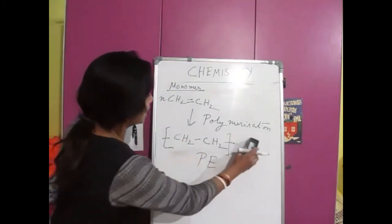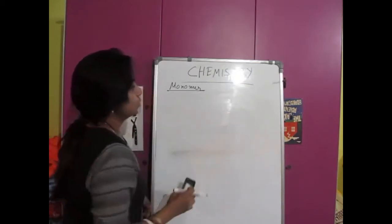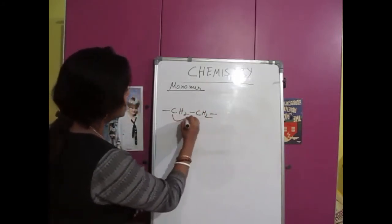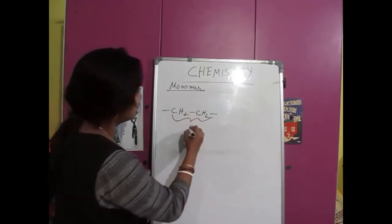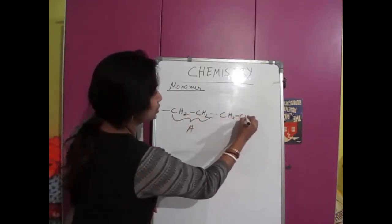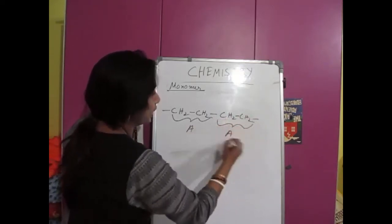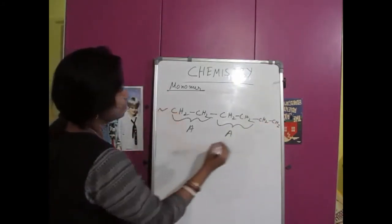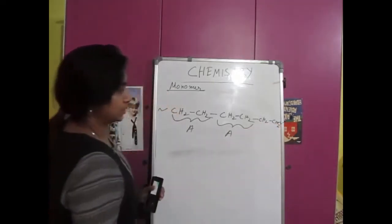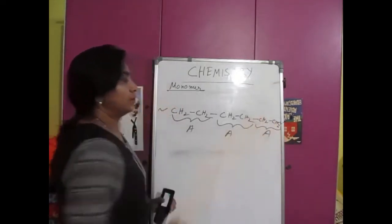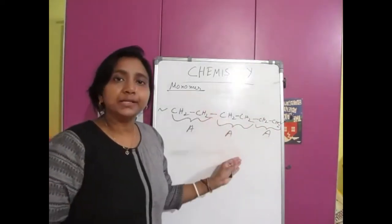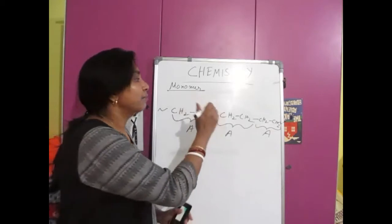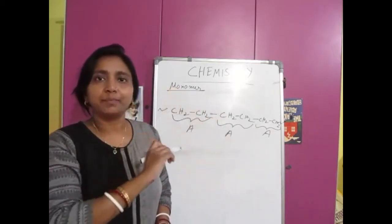Basically, if I write in this way: CH2, CH2 — so it is one unit, single unit, like say A. Again, we are writing CH2, CH2, so it is also another unit A. CH2, CH2 — and for the continuation, we will give this type of symbol. So here are the multiple units, that means repetition of the units. You understand the features of the polymer — there must be a repetition of the unit.